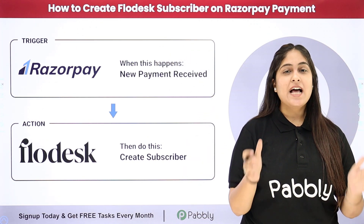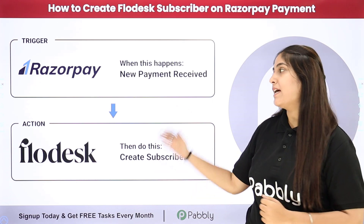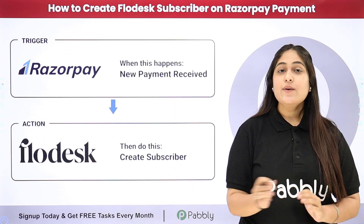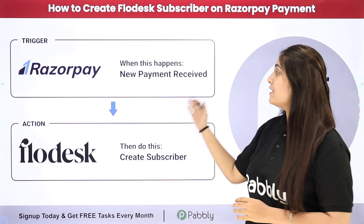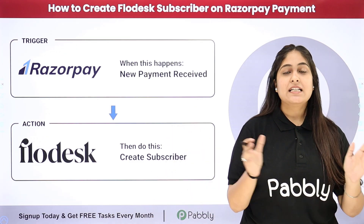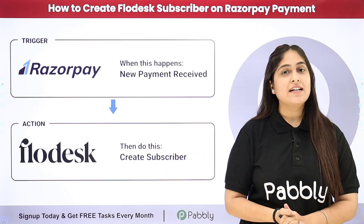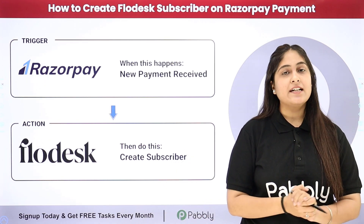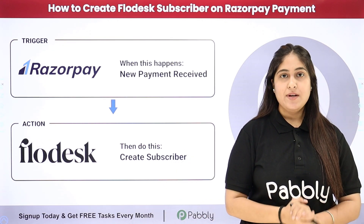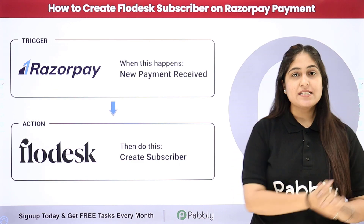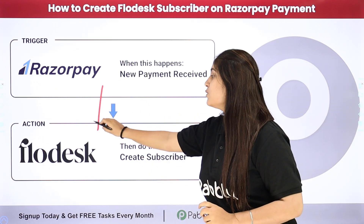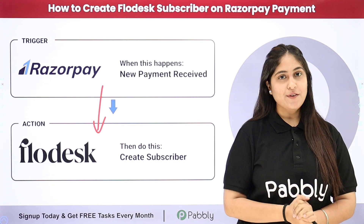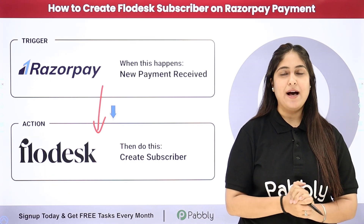I am running an online course and I am using Razorpay as my payment gateway to receive new payments. My objective is that whenever I receive a new payment through Razorpay, I want to add that customer as a new subscriber in my Flodesk account so that I can start engaging with them. To automate this entire process, I need to connect my Razorpay account with my Flodesk account using an automation software named Pabbly Connect.